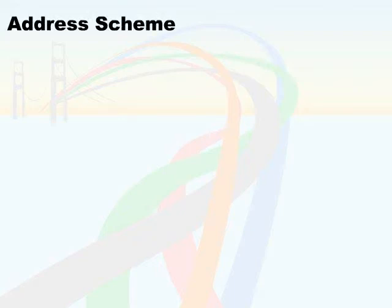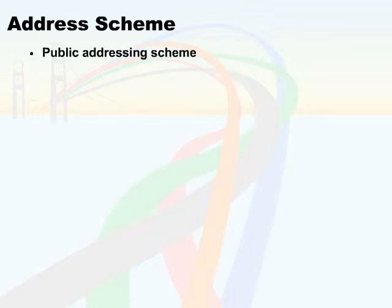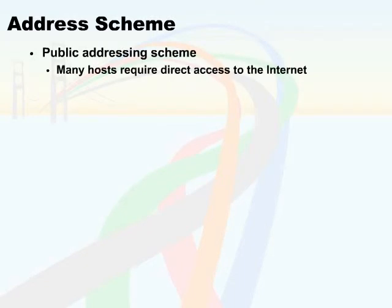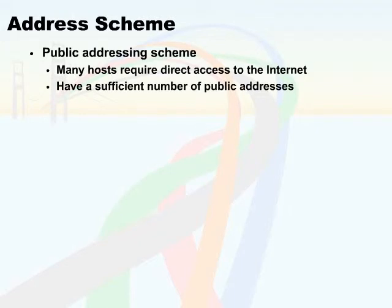When you're trying to identify what type of scheme you're going to use, you need to decide between a public addressing scheme and a private addressing scheme. A public addressing scheme is used when many of your hosts require direct access to the Internet, and you have a sufficient number of public addresses to go around.